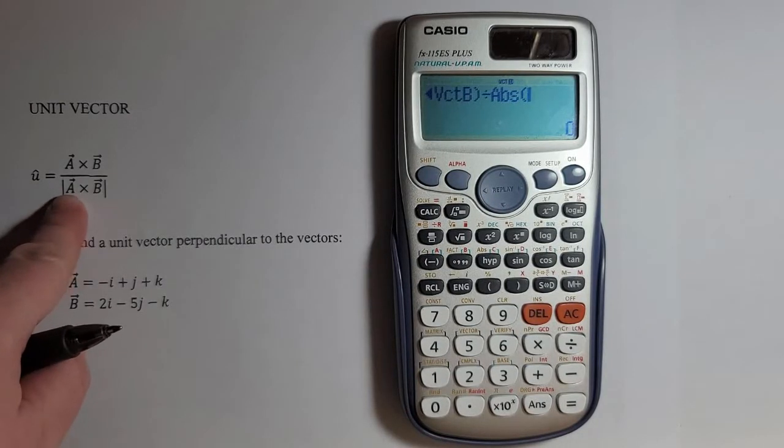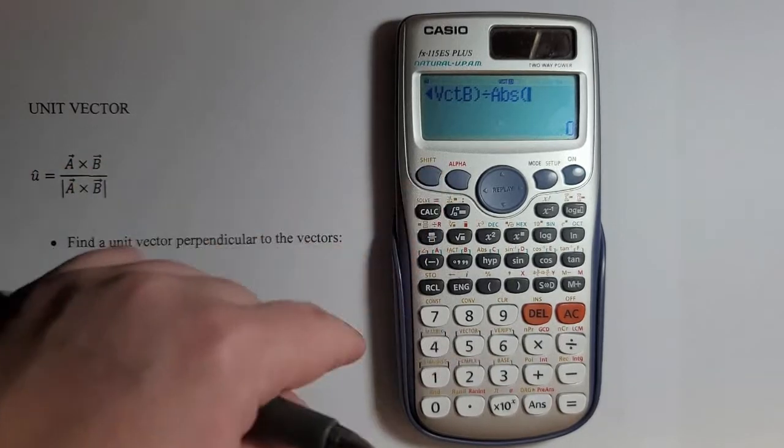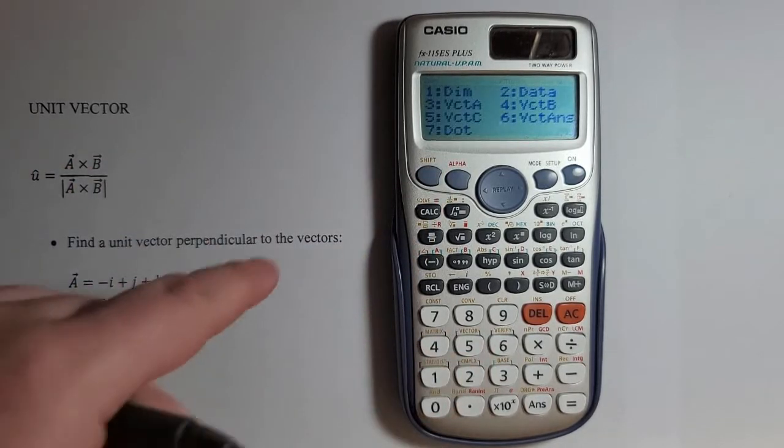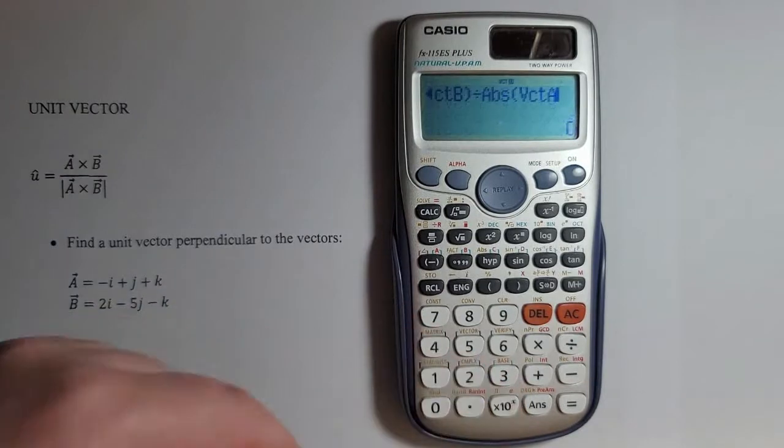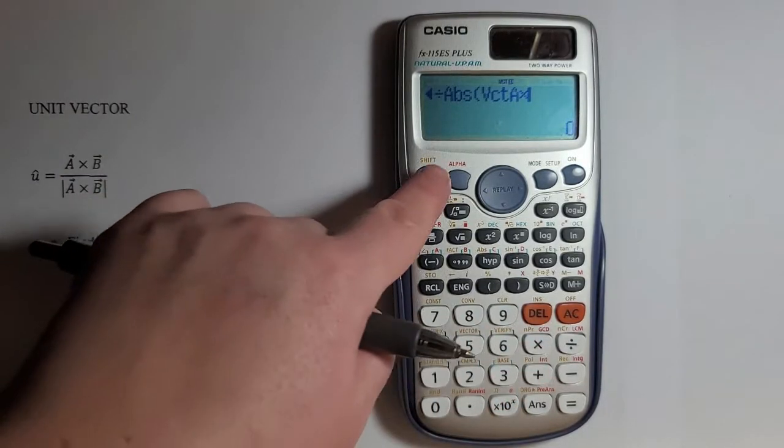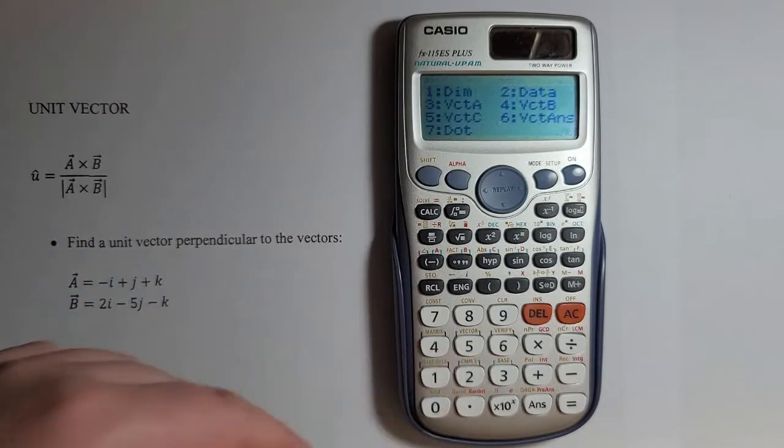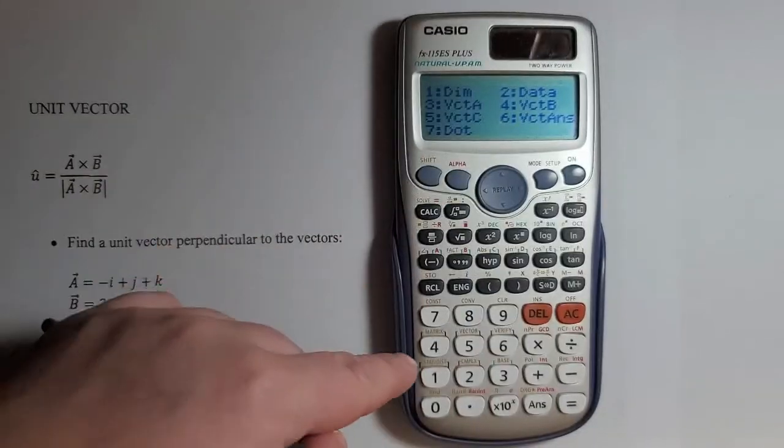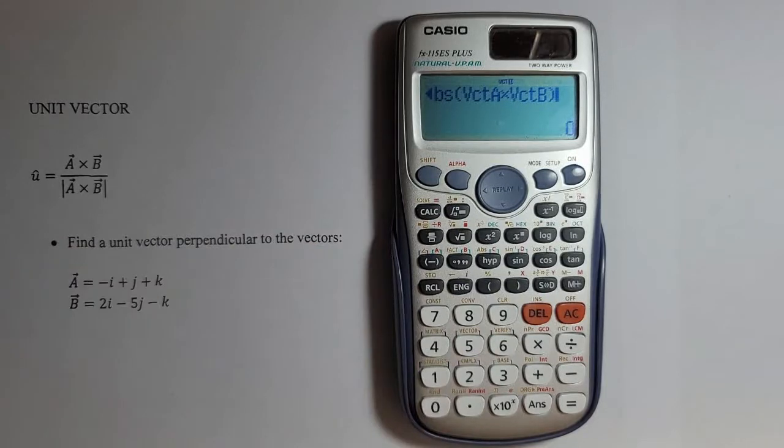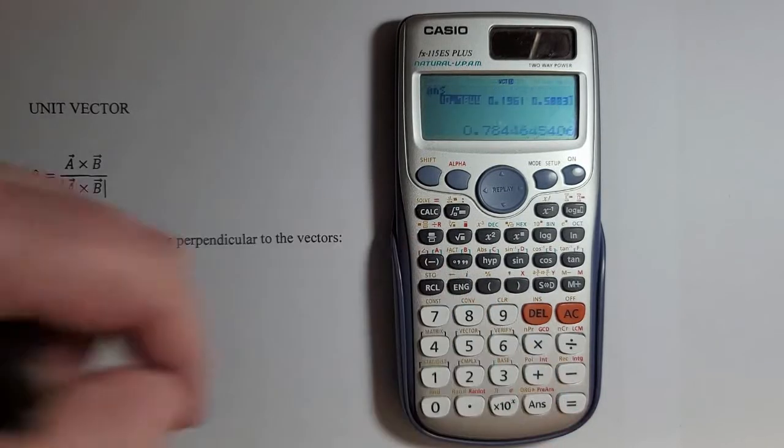Now I have vector a, so I'll press shift again, 5 for vector, then 3 for vector a. Cross product with vector b: shift again, 5, and now 4 for vector b. I'll close the parentheses and press equal.